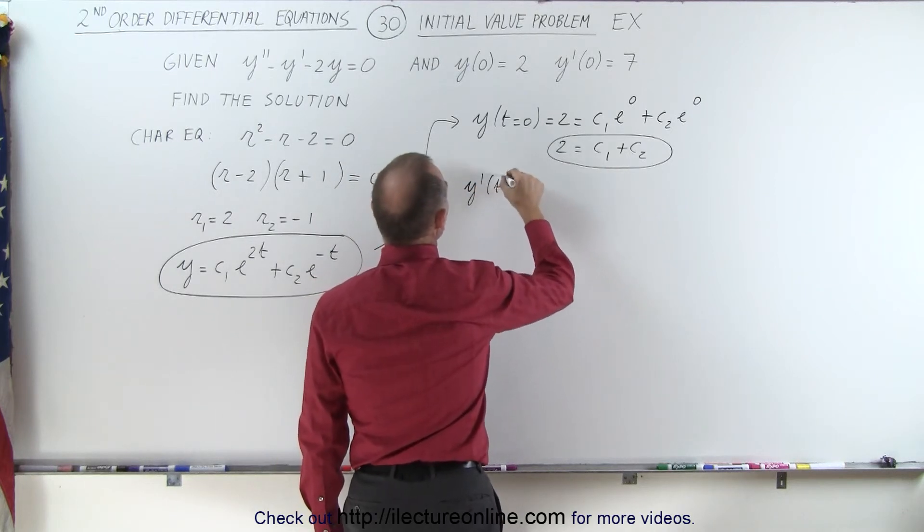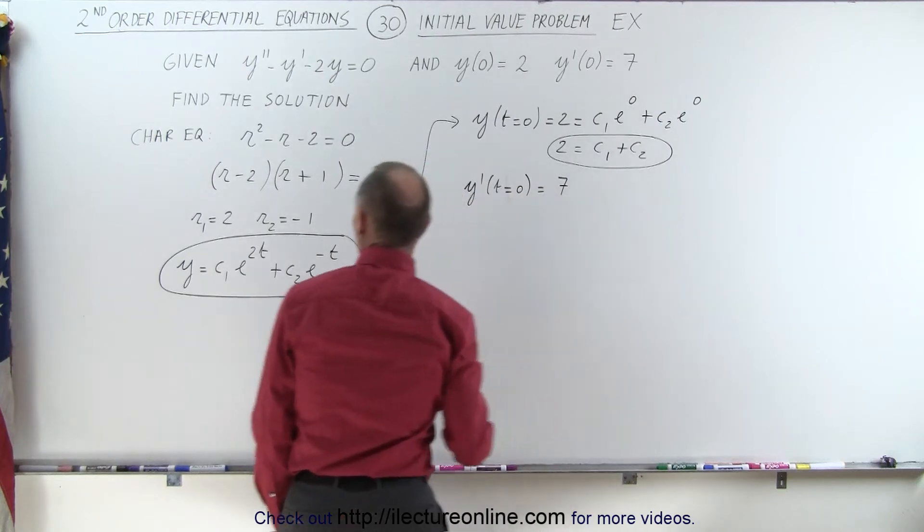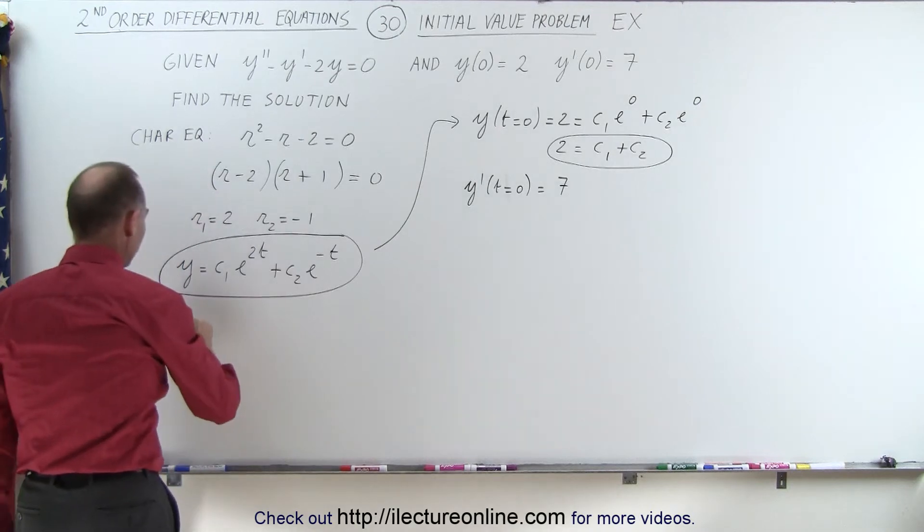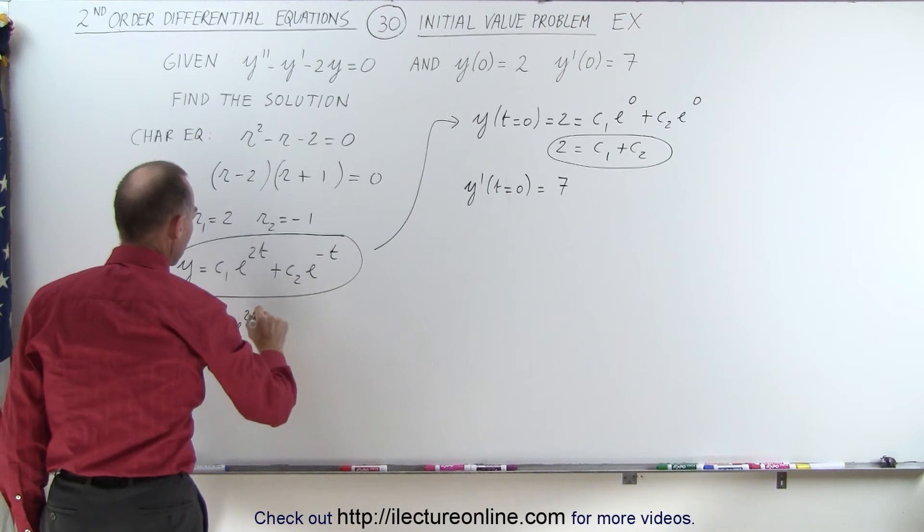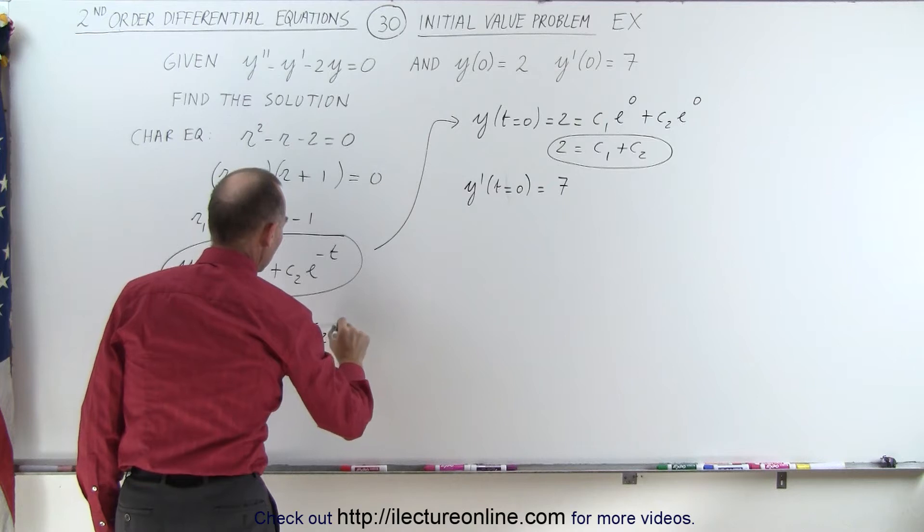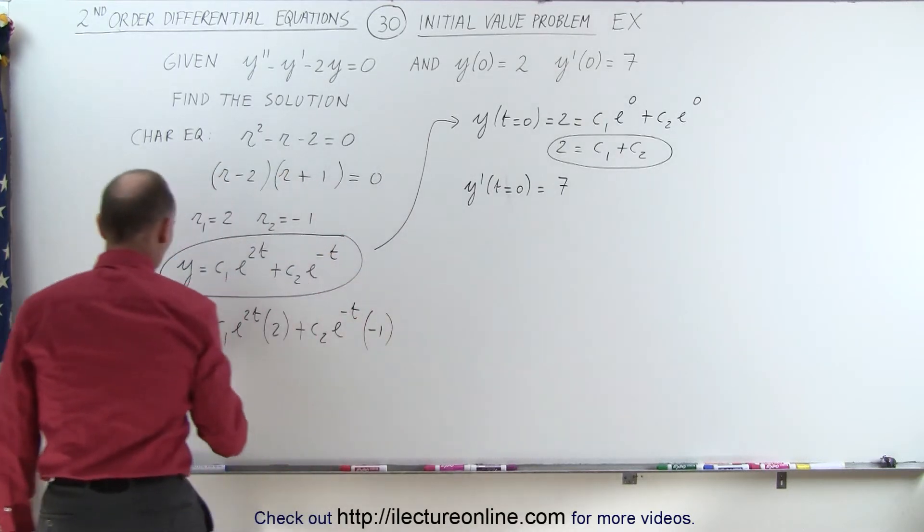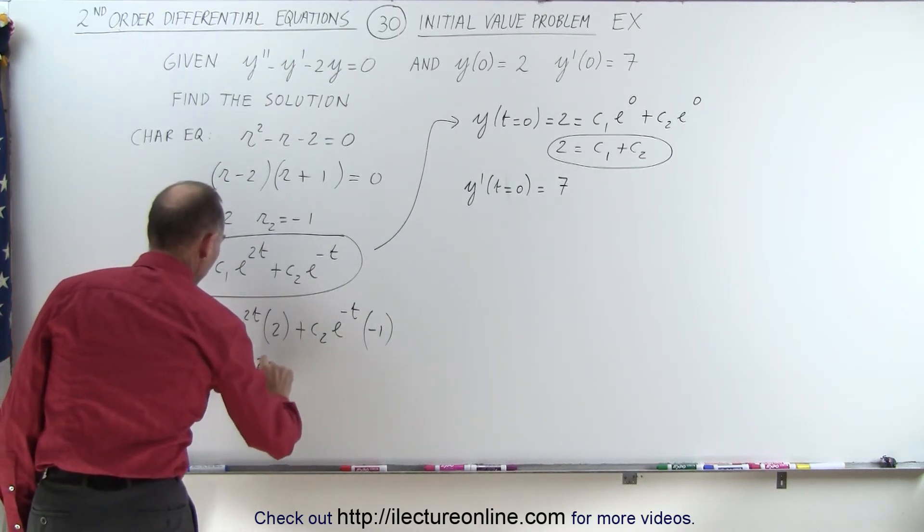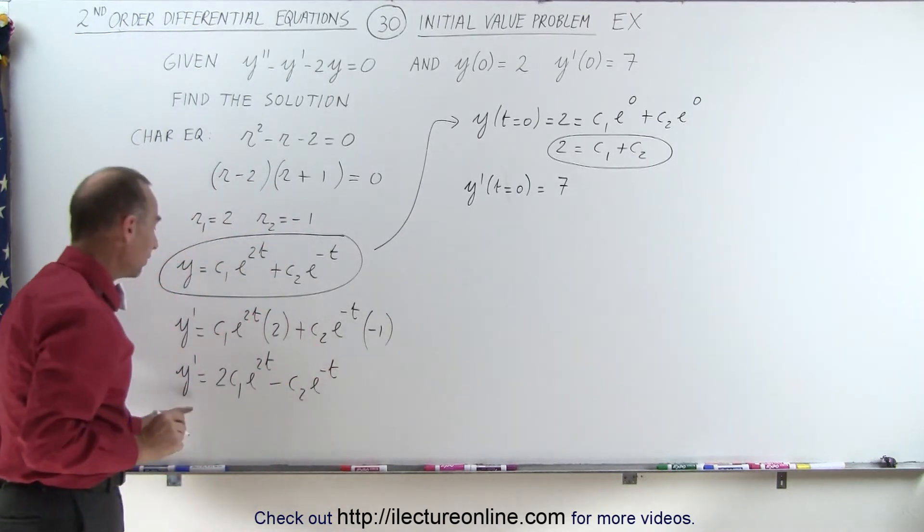y prime, when t is equal to zero, is equal to 7. Now, that means we need to find the derivative of this function. So when we take the derivative, y prime is equal to c1 e to the 2t times the derivative of the exponent, which is 2, plus c2 e to the minus t times the derivative of the exponent, which is minus 1. In other words, y prime is equal to 2 c1 e to the 2t minus c2 e to the minus t.